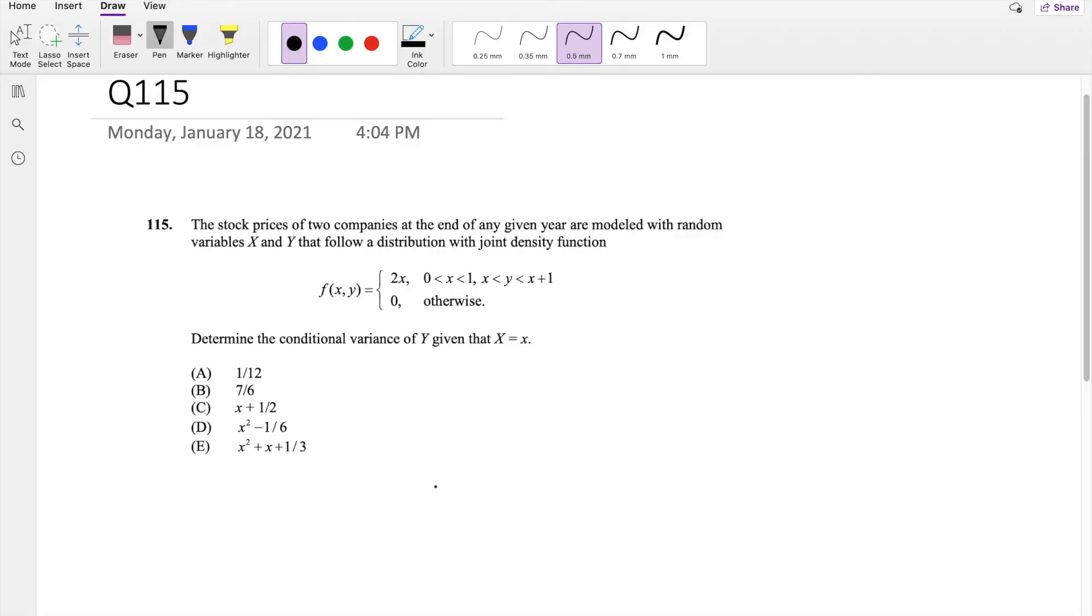115 on SOX AMP. So pause the video real quick and try this part yourself. Okay, assuming you attempted it, let's just dive right in. So they ask you to determine the conditional variance of Y given X equals x. That means we first need to find out what the probability function of Y given X equals little x is, right?